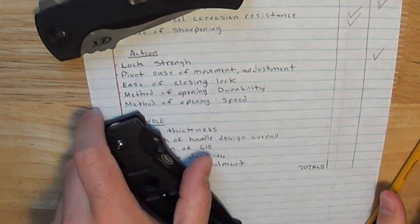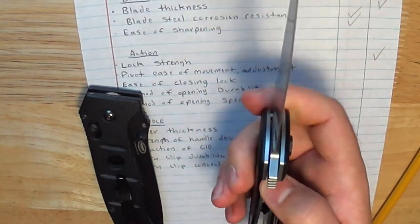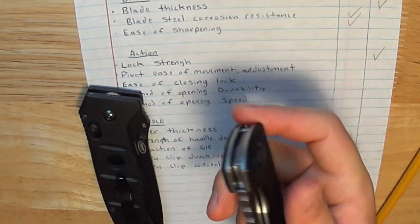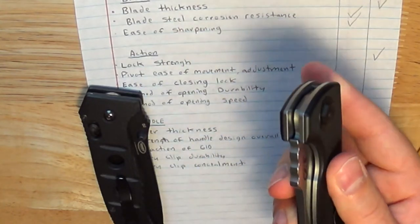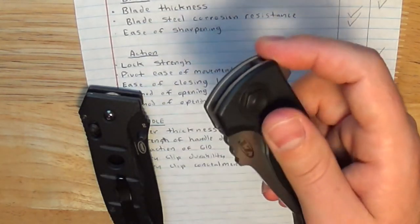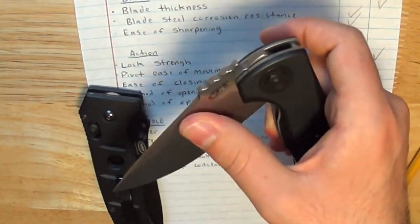Now we go to pivot movement and ease of adjustment. The ZT is on a ball bearing pivot, which is very smooth. The only thing about the ball bearing pivot on this knife is if it dries out or gets clogged with lint, it will basically clog the knife to the point where you only can flick this open to about here.